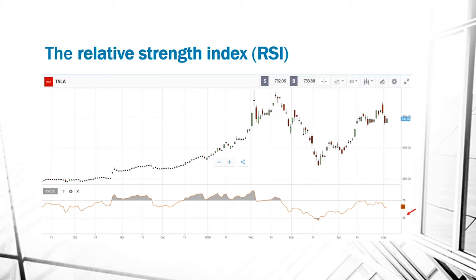Here we can see the 30 line. When the RSI line goes under 30, it is an indication of an oversold or undervalued condition. And here we can see the 70 line — when the line goes above 70, it is overbought or overvalued.